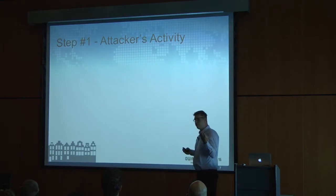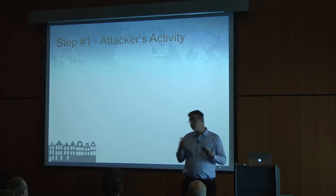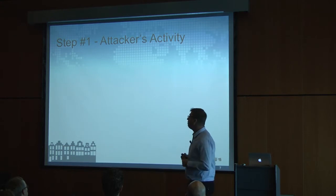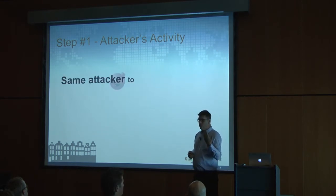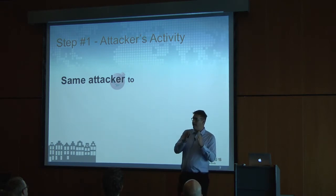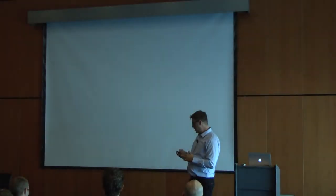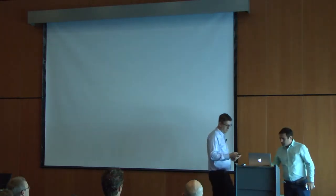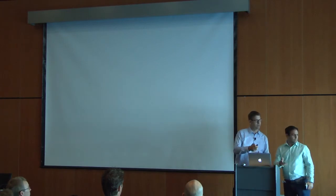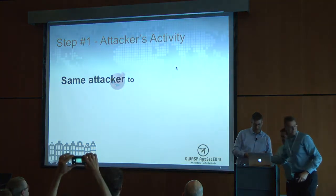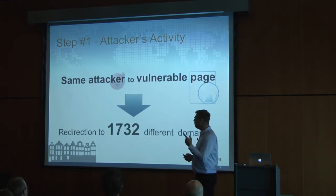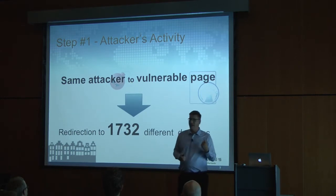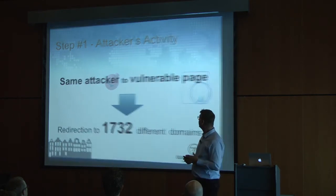We started with a single HTTP request going to an application, and saw that this request is most likely abusing an open redirect vulnerability. Now we want to do more intelligence on that data. The first step: let's look at attacker activity. We have an IP address sending malicious traffic to an application. Looking at all traffic from that attacker to the vulnerable application over 24 hours, we saw that the attacker is redirecting traffic to more than 1,700 different domains.